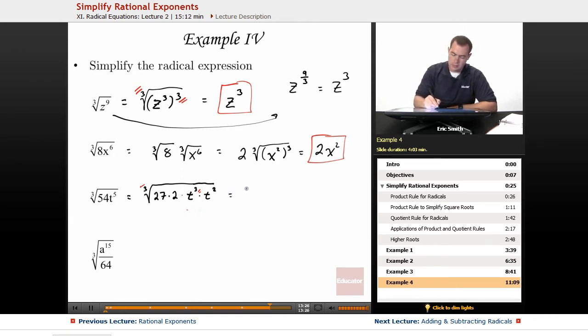All right, so then we could take the cube of everything in here, so the cube of 27, the cube of 2, the cube of t cubed, and the cube of t squared. So some of these will simplify, some of them won't.